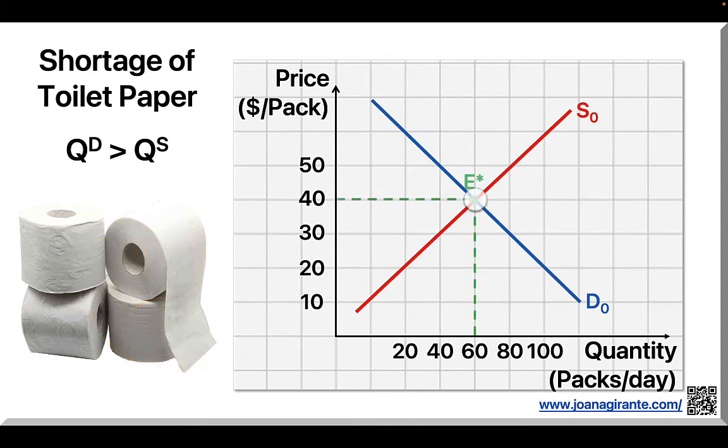Equilibrium occurs at E-star, where equilibrium price is $40 and equilibrium quantity is 60 packs per day.